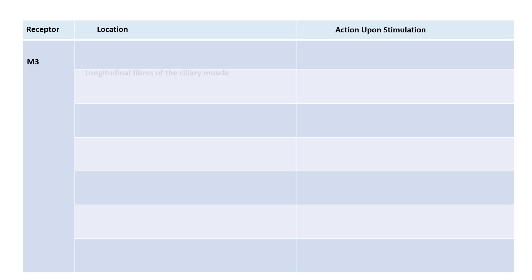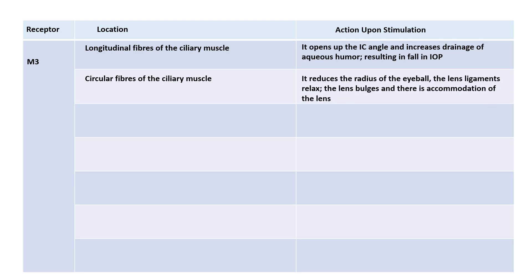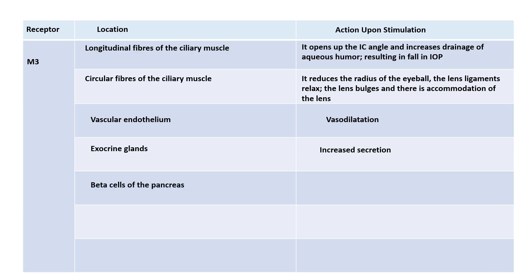M3 receptors are present in the longitudinal fibers of the ciliary muscle of the eye; stimulation causes contraction leading to opening of the iridocorneal angle, increased drainage of aqueous humor, and a fall in intraocular pressure. M3 receptors in the circular fibers of the ciliary muscle cause a net reduction in the radius of the eyeball, relaxation of the lens ligaments, and accommodation. M3 receptors in the vascular endothelium cause vasodilatation; in exocrine glands, increased output; in beta cells of the pancreas, increased insulin secretion; in the sphincter pupillae, miosis; and in the smooth muscle of the bronchi, bronchoconstriction.